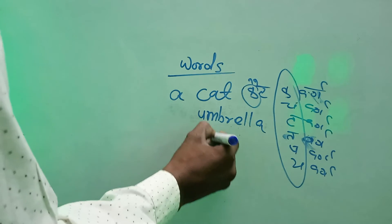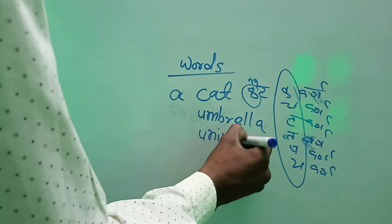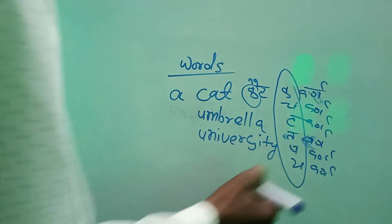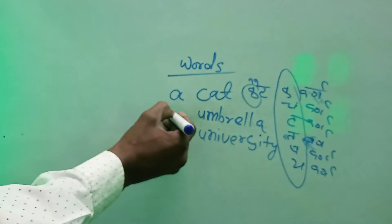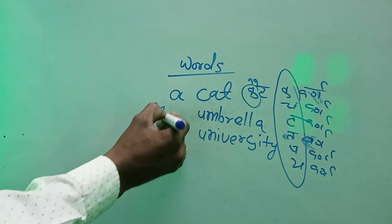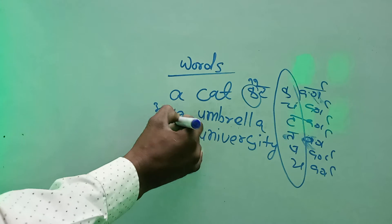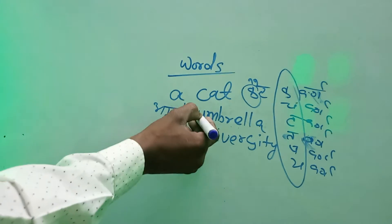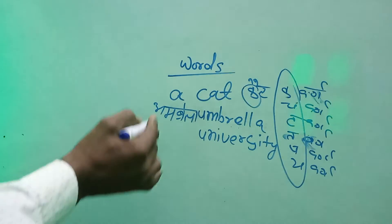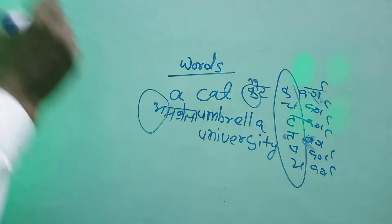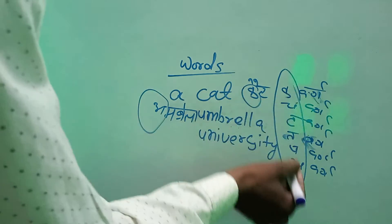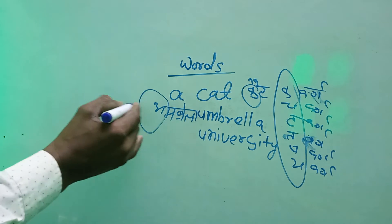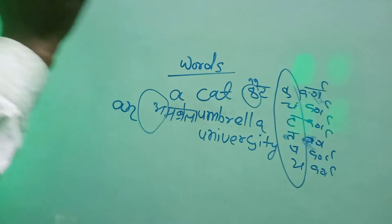Umbrella — university. What is the difference between them? Here is 'umbrella': U-M-B-R-E-L-L-A. When you write it, the starting sound is a vowel sound — O, A type — which belongs to the vowel group. Since it starts with a vowel sound, 'an' is used here. (यहाँ पर O-A का sound आ रहा है, जो vowels में से है, इसलिए 'an' का प्रयोग किया गया है।)